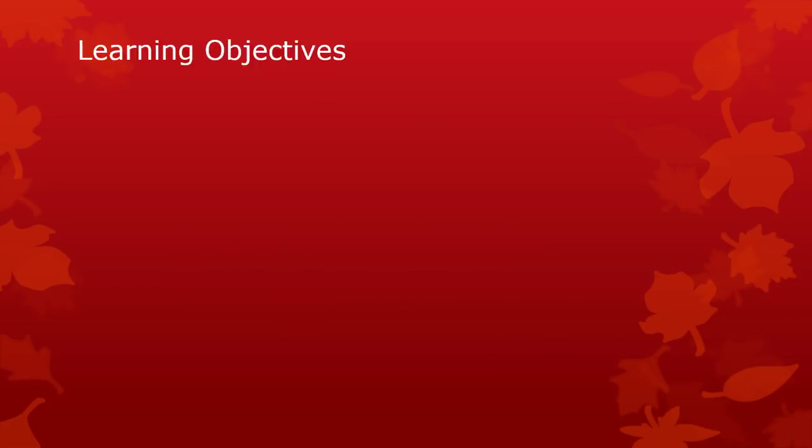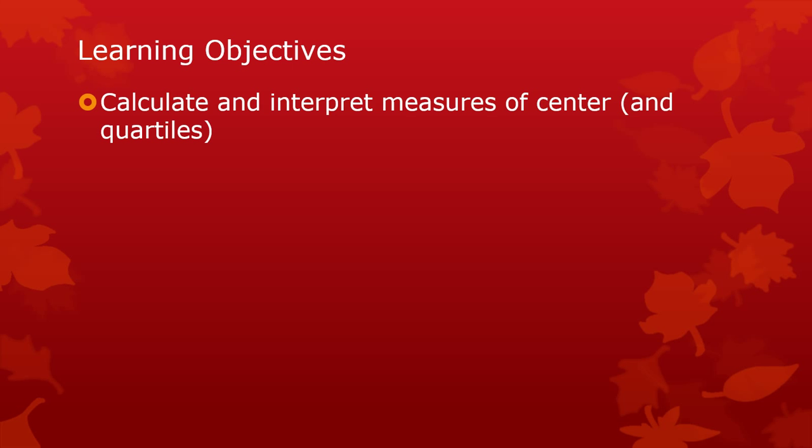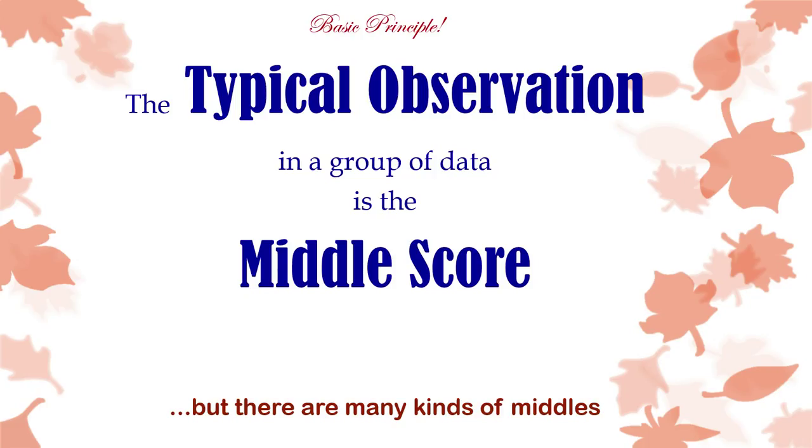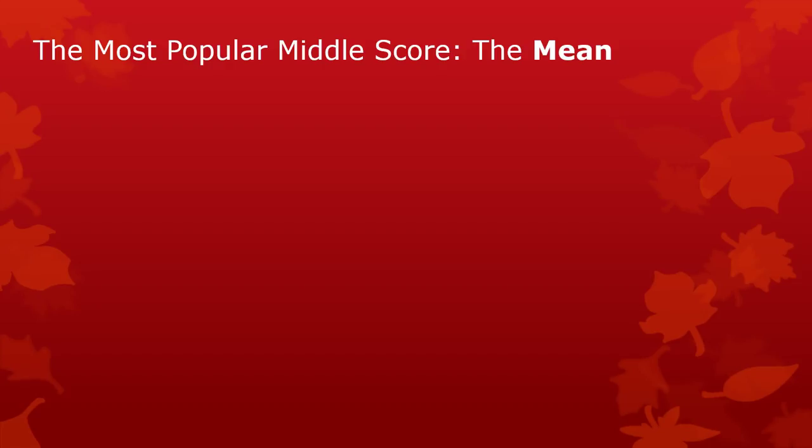Our learning objectives here are to understand what the mean is and how to calculate it. But you already know how to calculate it, so this is going to be putting it into statistical form. The typical observation in any group of data is the middle score. The mean is the most popularly used middle score, the measure of central tendency that everybody uses and learns in elementary school. You add up all the numbers and divide by the number of numbers that there are.